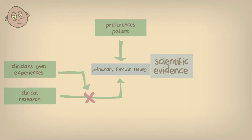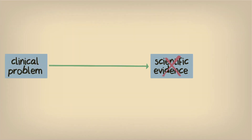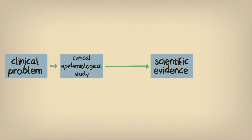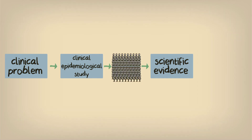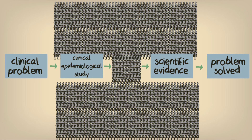Where does scientific evidence come from? And what can we do if there isn't any existing evidence from research related to our problem? We could decide to generate more evidence by designing and conducting a clinical epidemiological study. To do this, we generally collect information from hundreds or sometimes even thousands of patients that we can then use to synthesize new evidence in order to solve our clinical problem. While this may not help the patients sitting in your clinic right now, it could help you and other clinicians to make decisions for future patients.